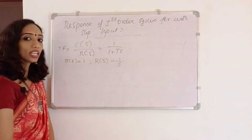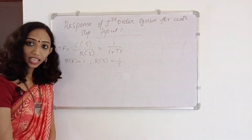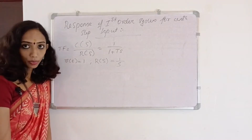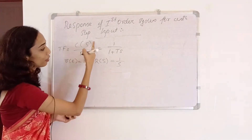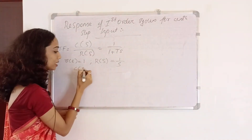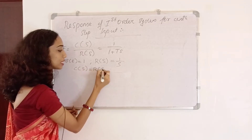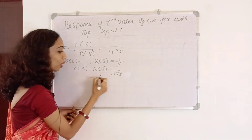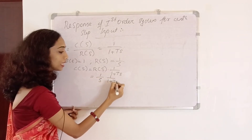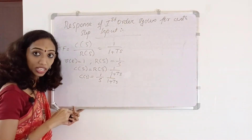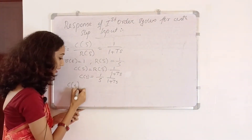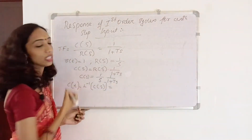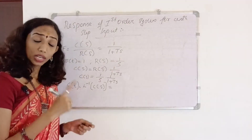C of S is equal to R of S into 1 by (1 plus T·S). That is, 1 by S into 1 by (1 plus T·S). So if we have this function, C of S equals 1 by S into 1 by (1 plus T·S). We have to find the inverse Laplace using partial fractions.